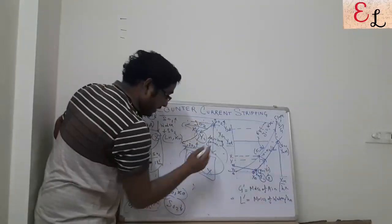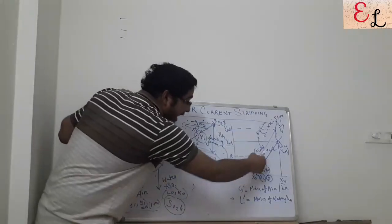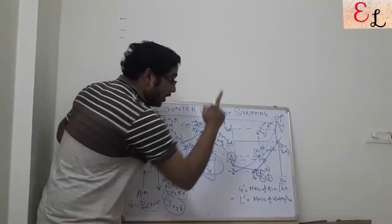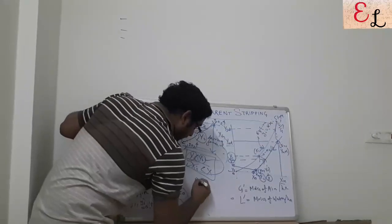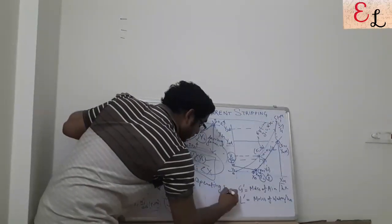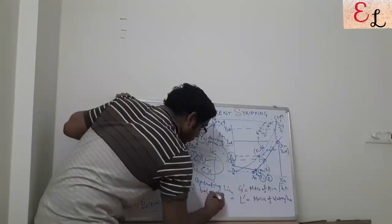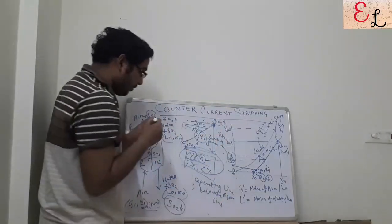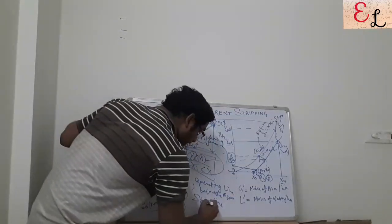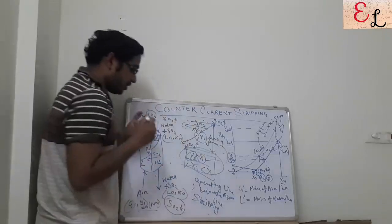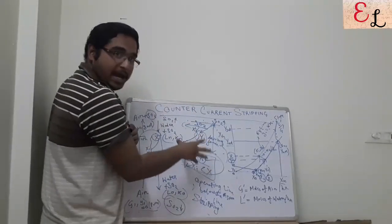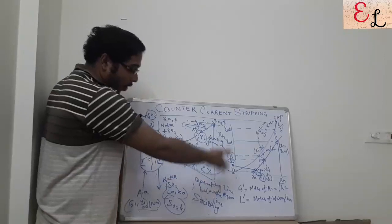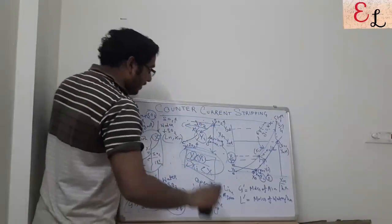So x > x_i and y_i > y are both satisfied, and this is only possible when the operating line is below the equilibrium line. When the operating line is below the equilibrium line, it is a stripping operation — very, very important. The condition y_i > y and x > x_i must be satisfied, confirming that SO2 flows from the liquid stream to the gaseous stream.